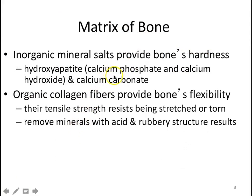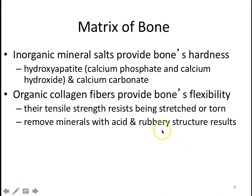Bone matrix is a connective tissue, so it has matrix. One component is an inorganic mineral salt called hydroxyapatite, which provides the bone's hardness. Hydroxyapatite is made up of calcium phosphate, calcium hydroxide, and calcium carbonate. However, without flexibility, bone would become very brittle. Along with inorganic salts, bones also have collagen fibers, which allow bones to be a little bit flexible — giving a little plasticity and springiness so they can absorb shock without just shattering.